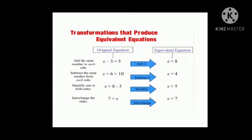Now, interchanging the sides. The value of x is already given. 7 is equal to x. By interchanging the sides, we get the answer x is equal to 7. So children, this was some of the examples of how to solve the equation by balancing them properly.